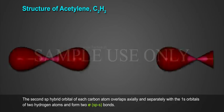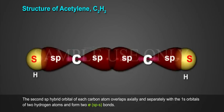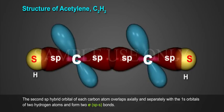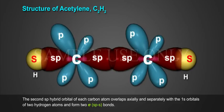The second sp-hybrid orbital of each carbon atom overlaps axially and separately with the 1s orbital of two hydrogen atoms and forms two sigma sp-s bonds.